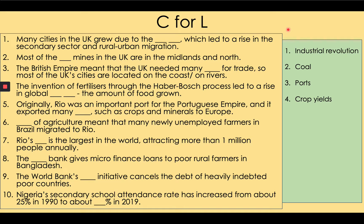Number 5: Originally, Rio de Janeiro was an important port for the Portuguese empire, and it exported many commodities such as crops and minerals to Europe. Number 6: Mechanization of agriculture meant that many newly unemployed farmers in Brazil migrated to Rio. Number 7: Rio's Carnival is the largest in the world, attracting more than a million people annually. Number 8: The Grameen Bank gives microfinance loans to poor rural farmers in Bangladesh and today among other countries.